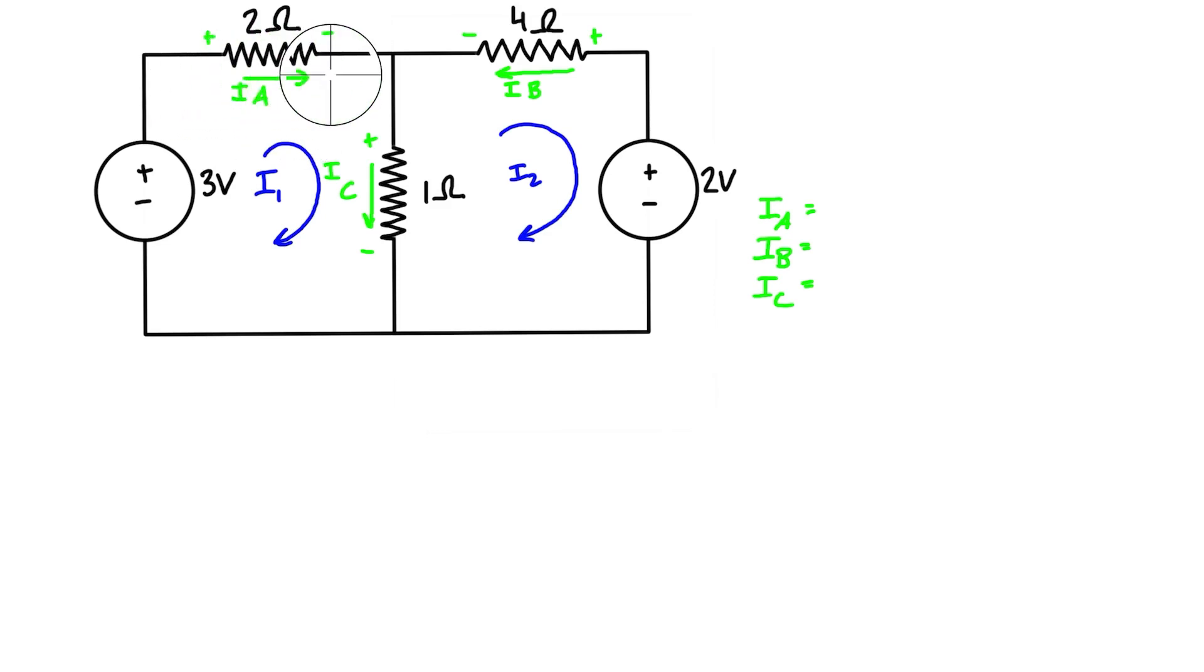Looking at ia here, we're saying that ia is going this way. If you wanted to draw on a mesh like this, it's going in the same direction, so ia is going to equal i1. When we look at ib, ib is going this way through the resistor but i2 is going the other way, so ib is actually going to end up being negative i2 as they have opposite directions but the same magnitude.